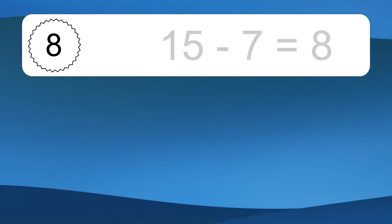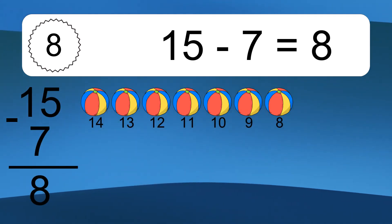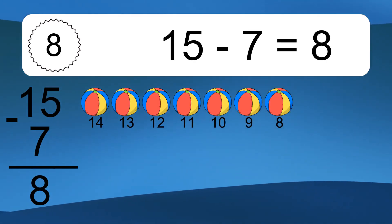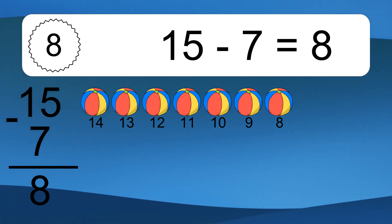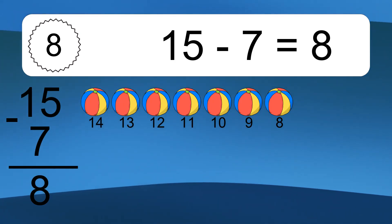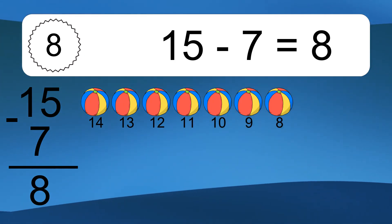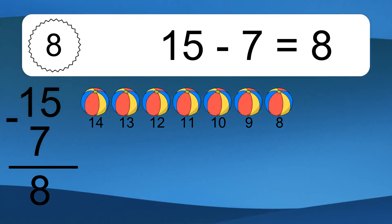15 minus 7 equals what? 15 minus 7 equals 8. Let's count it! 14, 13, 12, 11, 10, 9, 8.